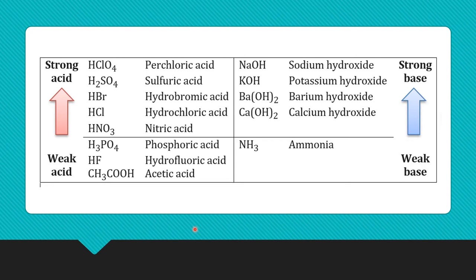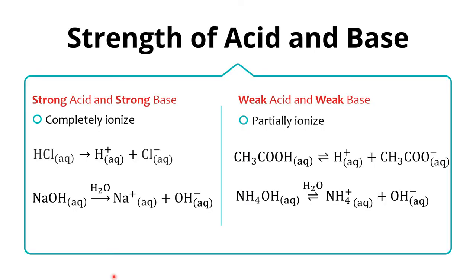This slide shows some acids and bases arranged by their relative strength. These are examples of strong acid, and these are examples of weak acid. These are examples of strong base, and ammonia is an example of weak base. How do we separate between strong and weak acid, and between strong and weak base?